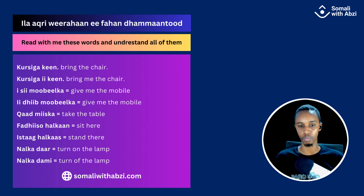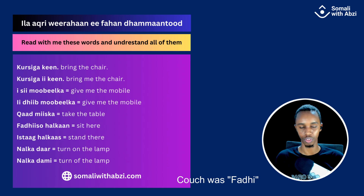The other one is 'qad miska' — 'miska' means the table, 'qad' means to take. 'Qad miska' — you could also say 'miska qad'. Then 'faliso halkan' — 'halkan' means here, so you can say 'faliso halkan' or 'halkan faliso', both correct. 'Faliso' means sit or to sit down. Then 'isteg halkas' — 'halkas' means there, and 'isteg' means to stand. So 'halkas isteg' or 'isteg halkas' — both ways are correct.